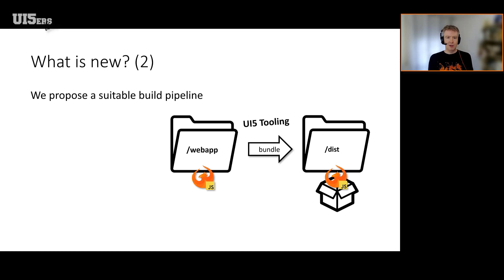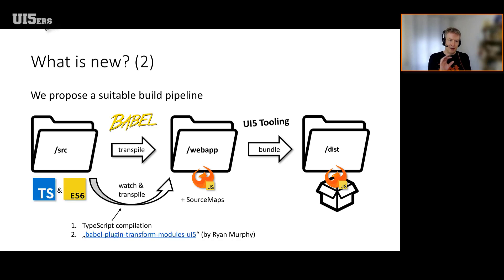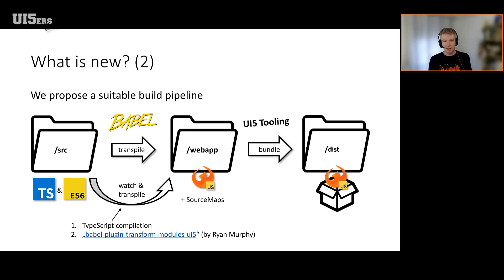When you're developing a UI5 project, it's usually a web app folder with your controller, component, views and everything. Now this adds another step in front: you develop the controller, component, and views in TypeScript in the source folder using ES6 module syntax, then there is a transpilation step which generates the stuff in the web app folder. This is powered by Babel with two plugins: first the TypeScript compilation itself, and second the 'transform-modules-ui5' Babel plugin from Ryan Murphy, which transforms ES6 module syntax to something UI5 understands — sap.ui.define and controller.extend.